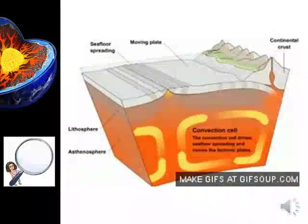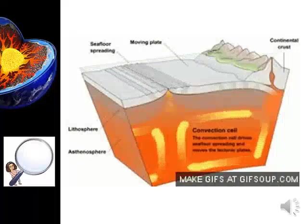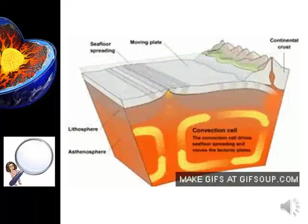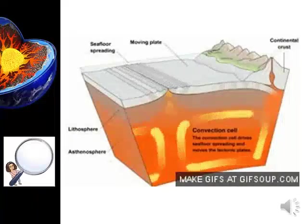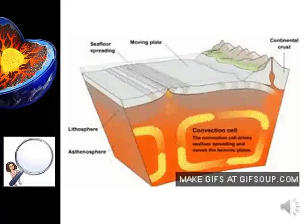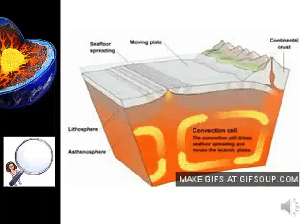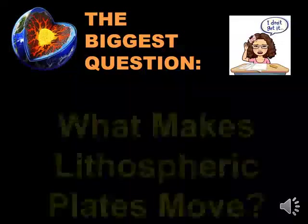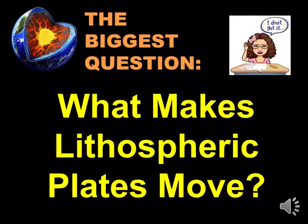Let's look at another animation of a convection cell. The convection cell shows how heat comes from deep within the Earth. Ridge Push is caused by magma intrusion and provides additional force. Slab Pull, caused by subduction, is also another driving force. Can you now describe the possible causes of plate movement, or explain the process of convection happening in the mantle?